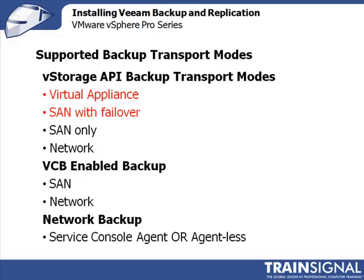The first transport mode is Virtual Appliance, which I'll be demonstrating in this video series. The second is a physical server with SAN with Failover — the physical server has direct Fiber Channel or iSCSI access to the storage area network, with iSCSI being most popular. The failover portion means it also has TCP/IP connectivity back to the virtual infrastructure. The third option is SAN only, and the fourth is network only — each providing only one method of accessing the virtual infrastructure data.